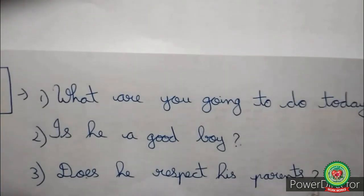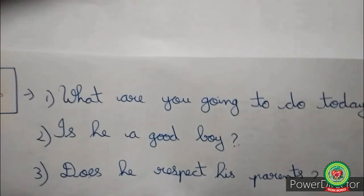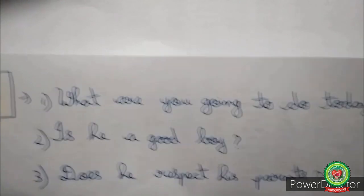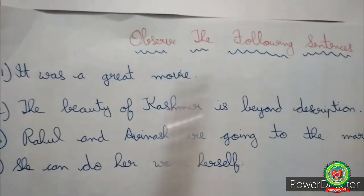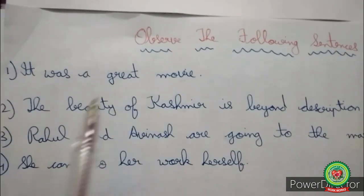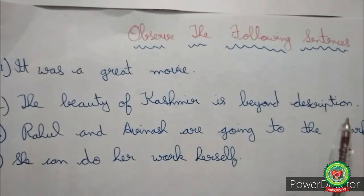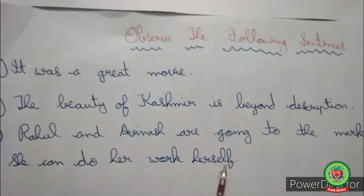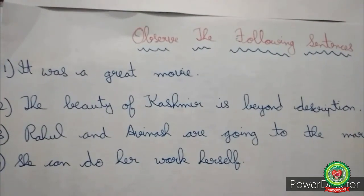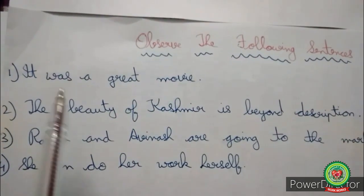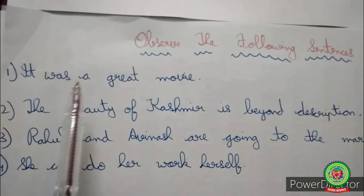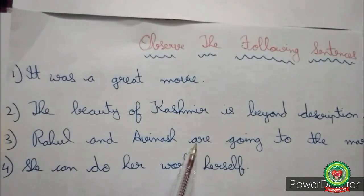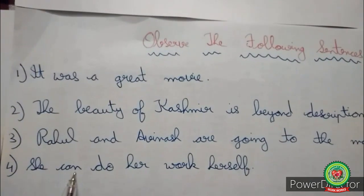Now students, we will learn how to change an assertive sentence into an interrogative sentence. Observe the following sentences: 'It was a great movie.', 'The beauty of Kashmir is beyond description.', 'Rahul and Avinash are going to the market.', 'She can do her work herself.' Do you find helping verbs in these sentences? Yes — was is the helping verb in the first sentence, is in the second, are in the third, and can in the fourth.